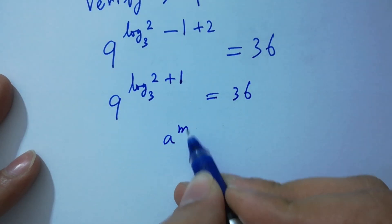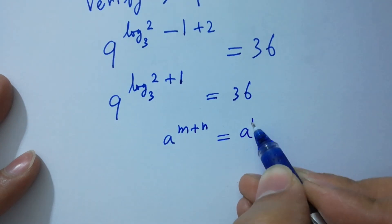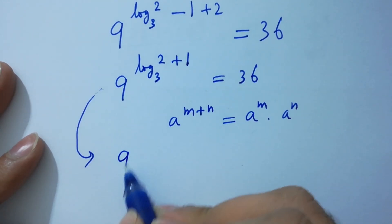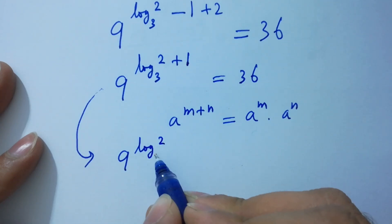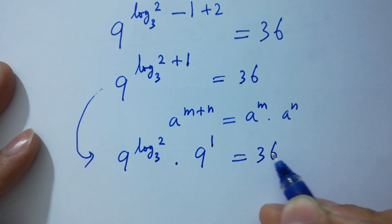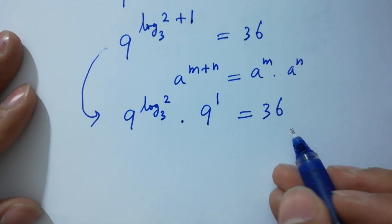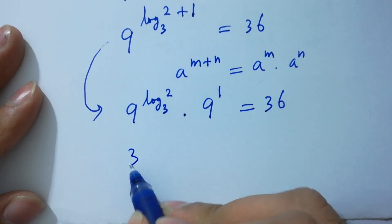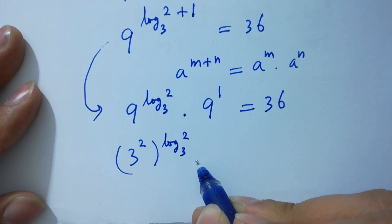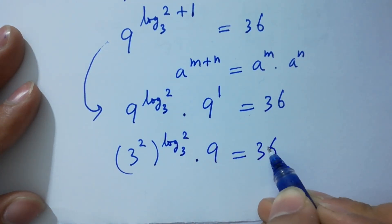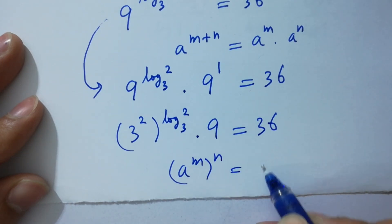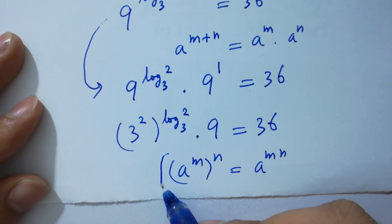As a to the power m plus n equals a to the power m times a to the power n, it will be 9 to the power log 2 to the base 3 times 9 to the power 1 equals 36. Since 9 equals 3 squared, we have 3 squared to the power log 2 to the base 3 times 9 equals 36.